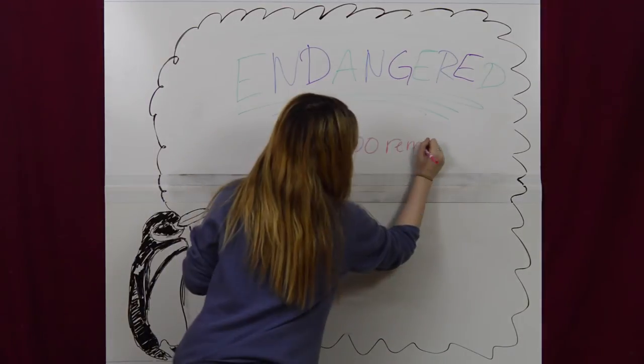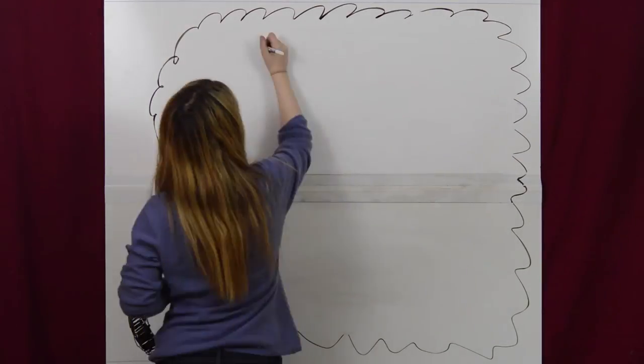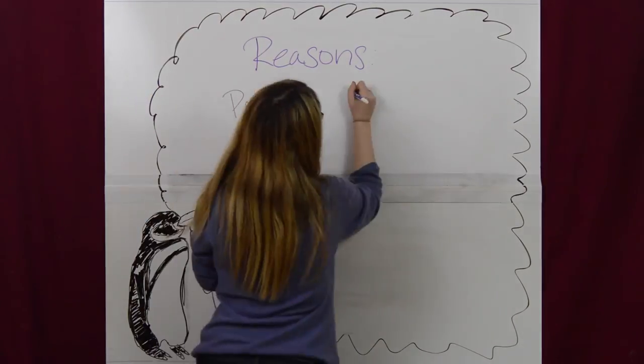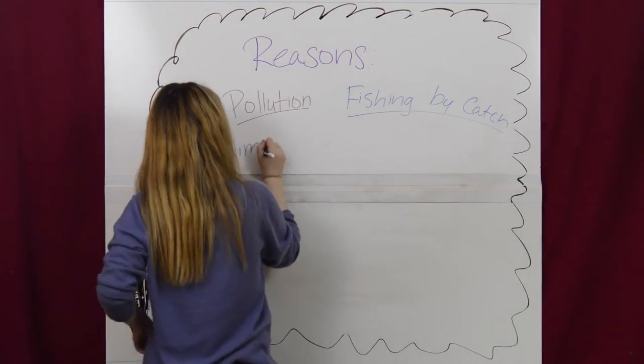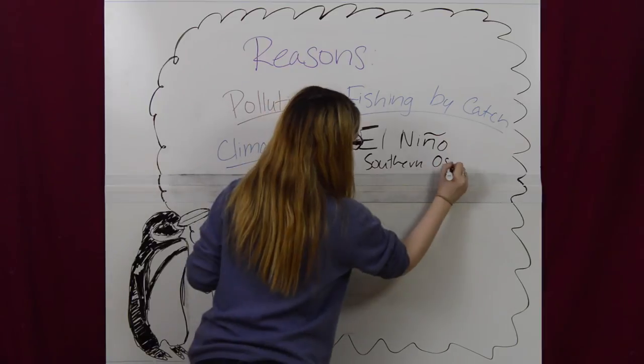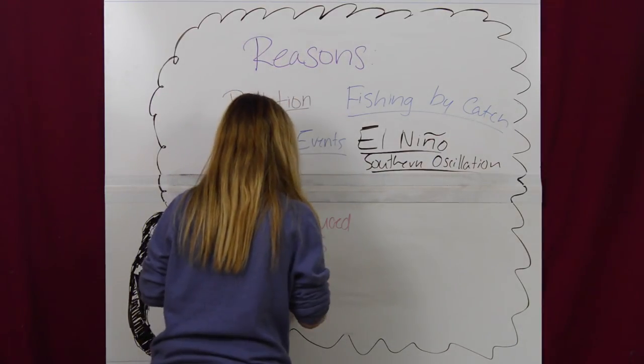Penguins are threatened by pollution, bycatch, and climate change. Introduced species such as dogs carry diseases that can spread to penguins as well, and cats pose a threat as predators. Past strong El Nino events have caused mortalities up to 77%, with dramatic declines of prey species and reduced breeding success.